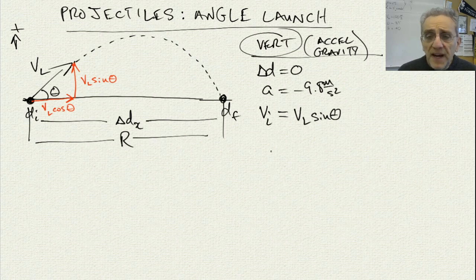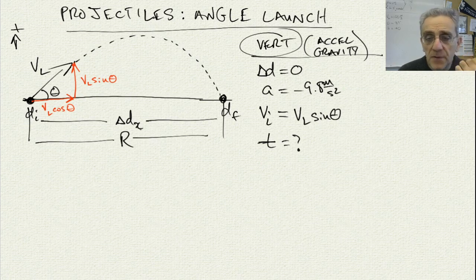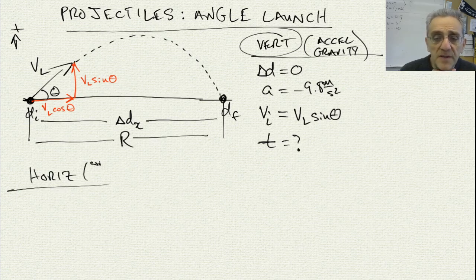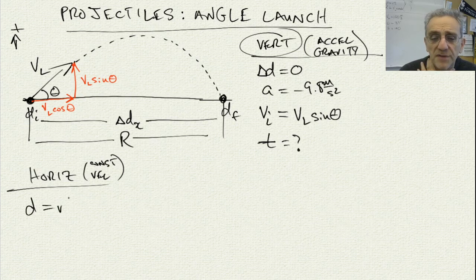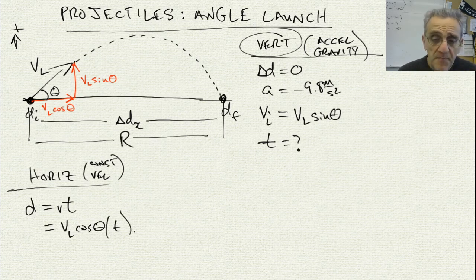What we want to find is how many seconds this object is in the air. Because once we find the time, we'll be able to take that time and move it over into our horizontal analysis and figure out the range from there. The horizontal situation is constant velocity, so distance horizontally equals velocity multiplied by time. The horizontal velocity is VL cosine theta — all we have to do is multiply by time to get our answer. But we don't know what the time is.